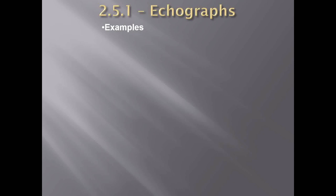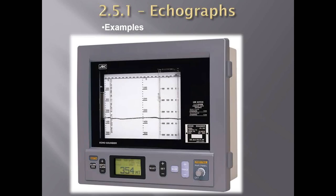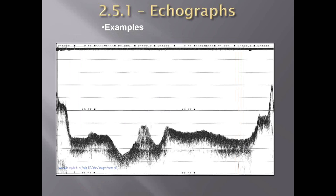Let's start with echo graphs. As the name suggests, this type of echo sounder displays and records the depth of the water on a special type of paper, and also digitally on various types of displays. However, they must comply with certain performance standards. This type of echo sounder with the echo graph display has a number of inherent advantages over other types.